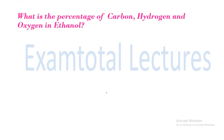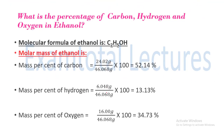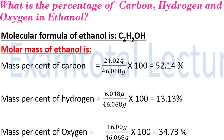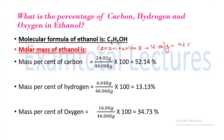Let's take another example. What is the percentage of carbon, hydrogen, and oxygen in ethanol? The formula of ethanol is C₂H₅OH, that is 2 carbon atoms, 6 hydrogen atoms, and 1 oxygen atom. So the molar mass of ethanol: 2 into 12.01, plus 6 into 1.008, plus 16.00 grams, which comes out to be 46.068 grams. This is the molar mass of ethanol.